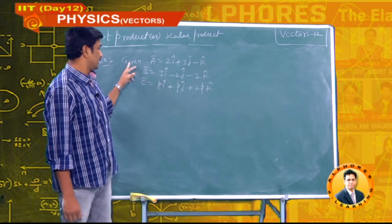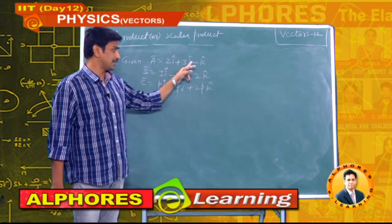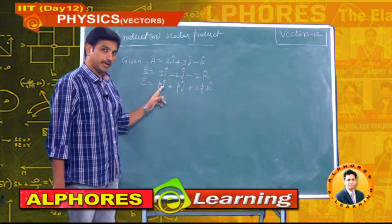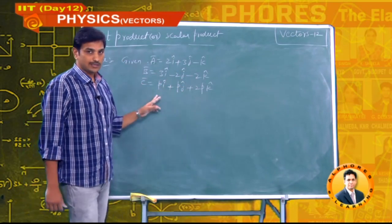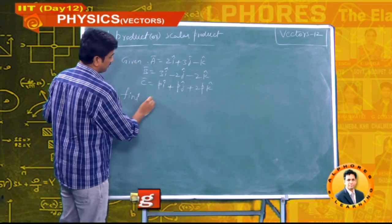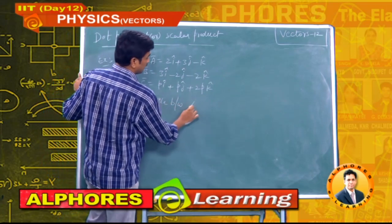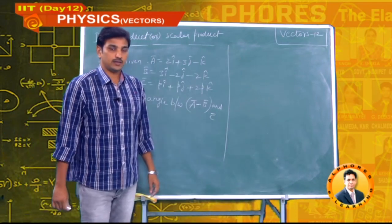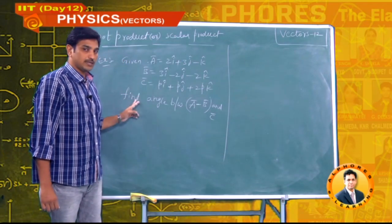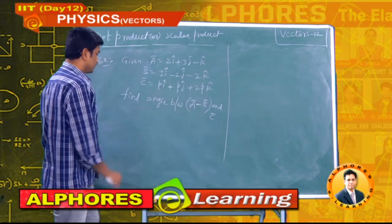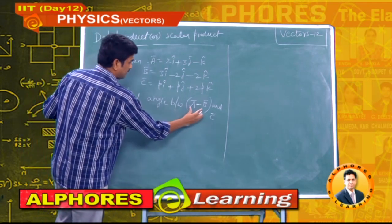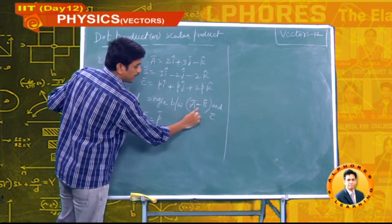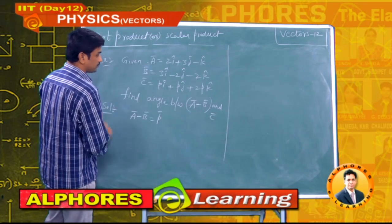Next question: Ā = 2î + 3ĵ − k̂, B̄ = 3î − 2ĵ − 2k̂, C̄ = Pî + 2k̂. Find the angle between Ā − B̄ and C̄. Let P̄ = Ā − B̄, so we need the angle between P̄ and C̄.